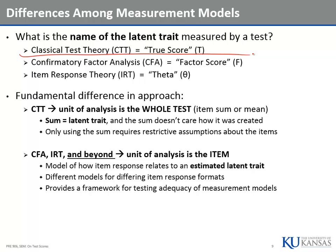In CFA, IRT, and beyond, the unit of analysis is the item. Each of these measurement models implies different distributions for the items and different distributions for the factor. Any combination of item distribution and factor distribution produces a measurement model. CFA is when we have items we think are normally distributed — which is tenuous at best. IRT is essentially CFA but when data are categorical items — either multinomial, such as graded response or partial credit or nominal, or binary items.